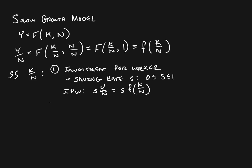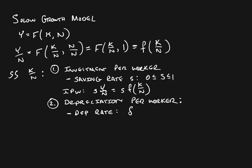The other thing that determines steady-state capital is the rate at which we lose capital per worker — depreciation per worker. We assume that capital depreciates at some constant rate, which we call delta (δ). Given this, we can write depreciation per worker as δ times the capital stock per worker. Capital is what wears out.